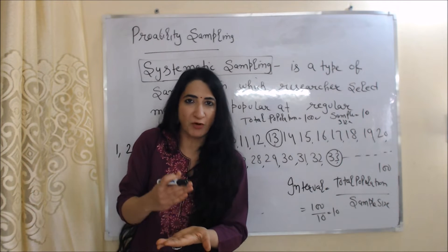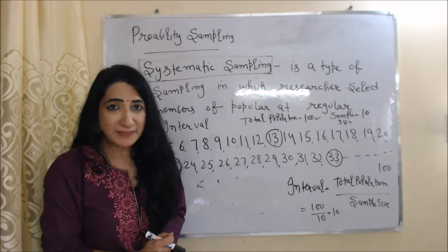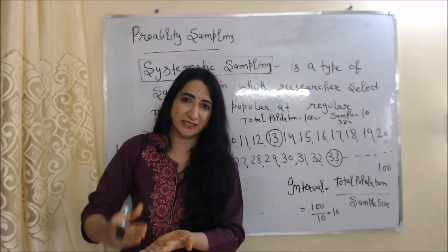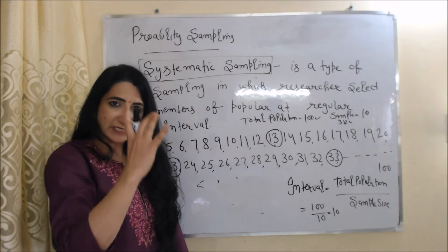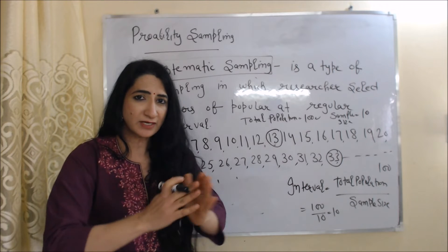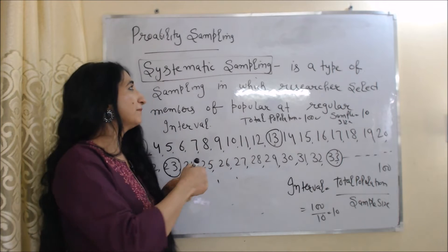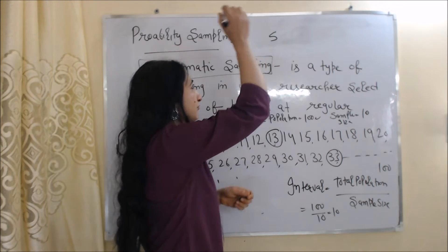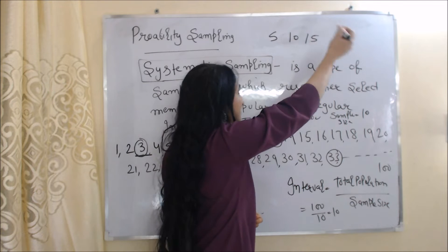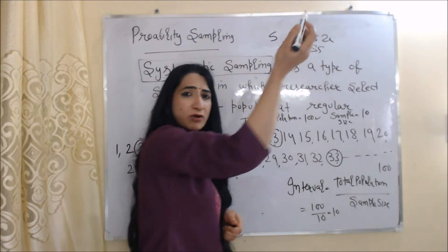Next we will talk about systematic sampling. Systematic sampling is a type of sampling in which researchers select members of the population at regular intervals. Regular interval means keeping an equal gap while selecting samples. For example: first sample is number 5, next is number 10, next is 15, next is 20 — maintaining an equal gap of 5. This is called a regular interval.